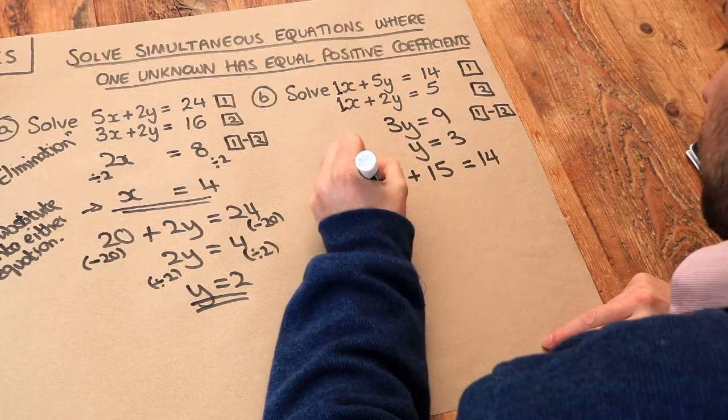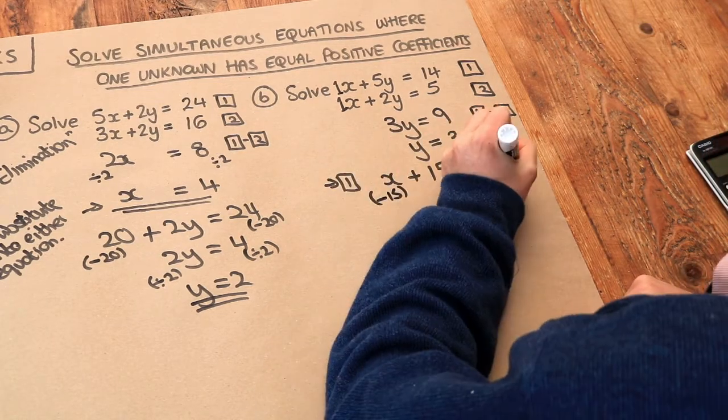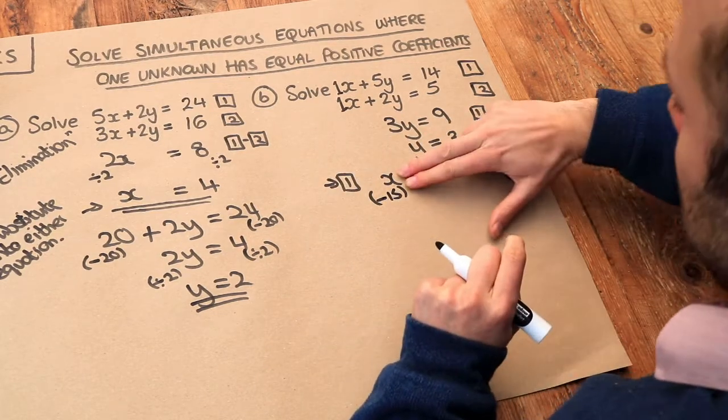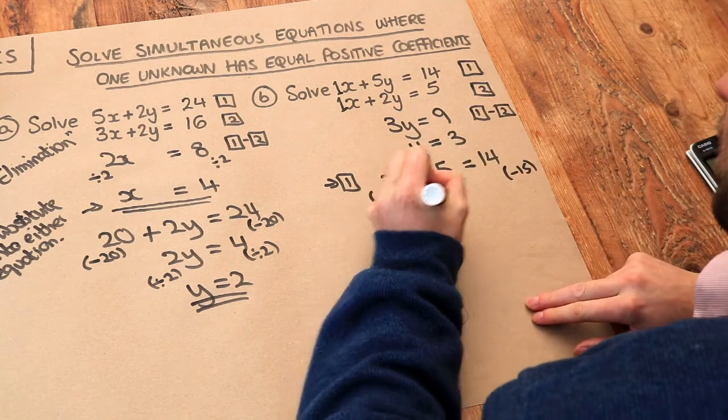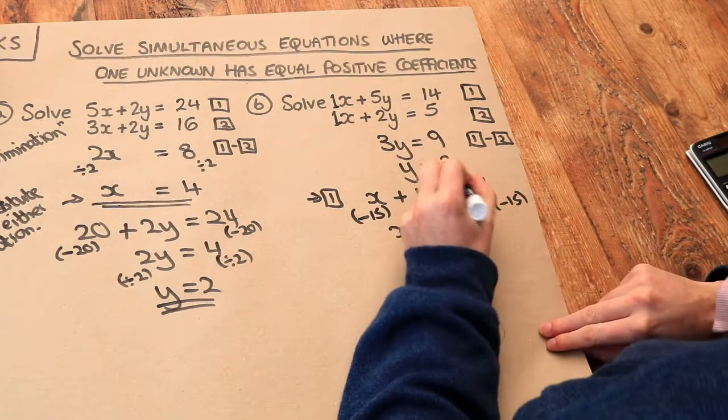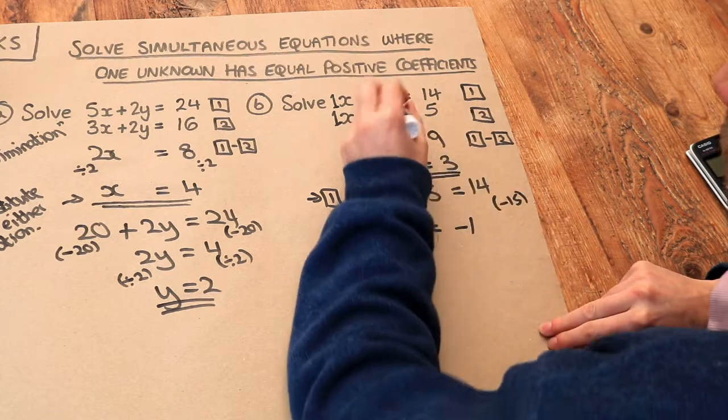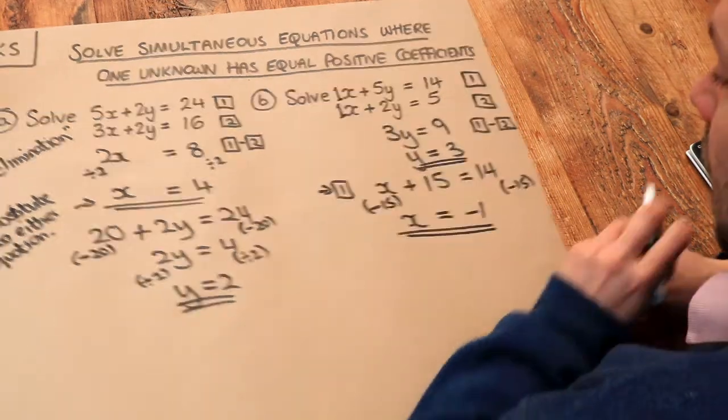And then to get rid of that plus 15 I'm going to subtract 15 from both sides of this equation. That gets rid of this plus 15 here to leave just x. And then 14 minus 15 is minus 1. And again we could check that with both equations but I know that's going to be right.